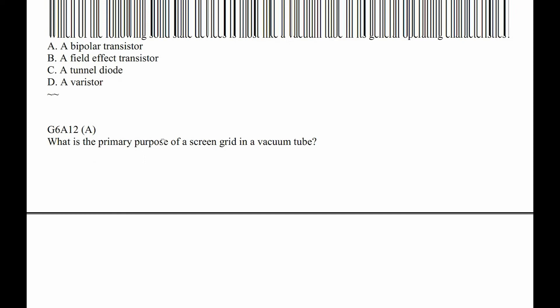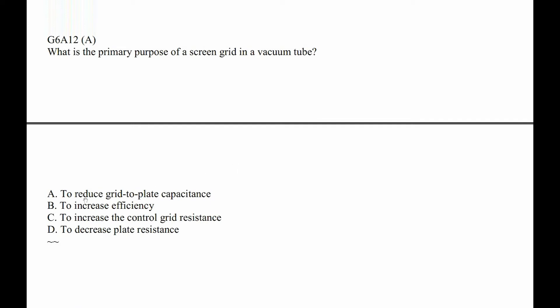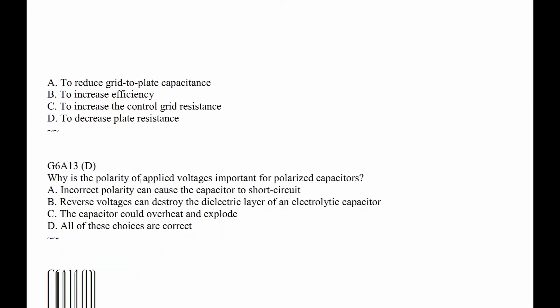G6A12. What is the primary purpose of the screen grid in a vacuum tube? It does reduce the grid to plate capacitance, but frankly there are other reasons for it. For some large tubes that's a good thing. G6A13. Why is the polarity of an applied voltage important to polarized capacitors? Incorrect polarity can cause it to short circuit, reverse voltage will destroy it and destroy the dielectric, and the capacitor could overheat and explode. The answer is all of the above, because all are true.